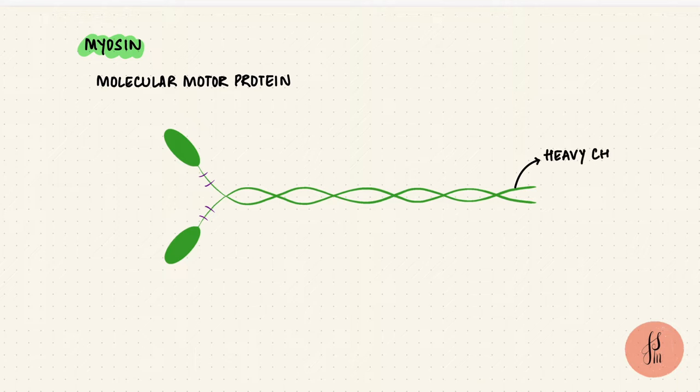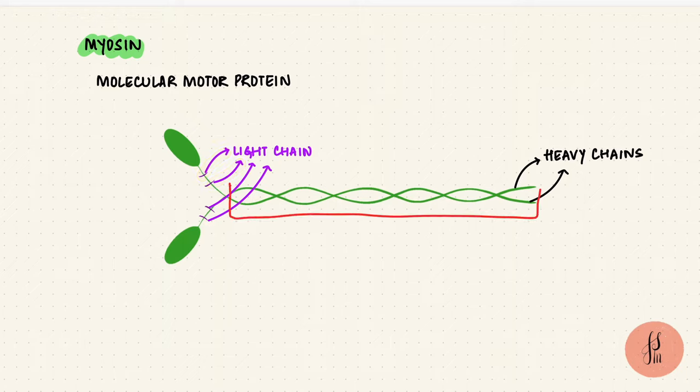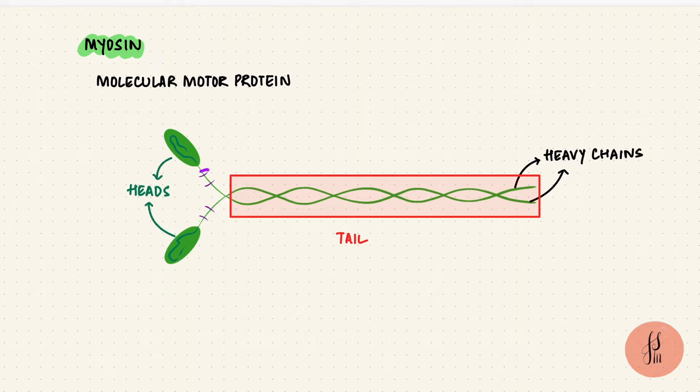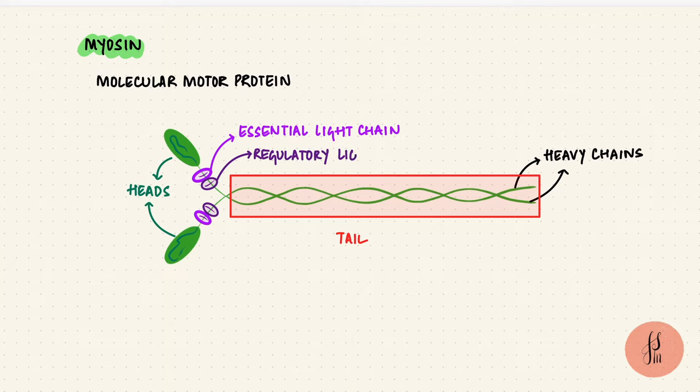Each molecule has two heavy chains and four light chains so it has a total of six polypeptide chains. The two heavy chains coil around each other and that forms the tail of the myosin molecule. Each chain then folds to form globular heads. The light chains include two essential light chains and two regulatory light chains. The regulatory chains regulate the ATPase activity of myosin.